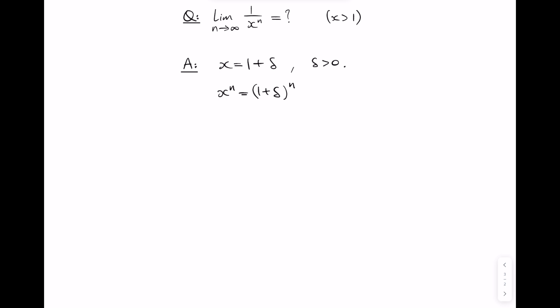Now recall we have the binomial theorem, which is the algebraic fact that a plus b to the power n is equal to a to the n plus n choose 1 times a to the n minus 1 times b plus n choose 2 times a to the n minus 2 times b squared all the way up to n choose n times b to the power of n.